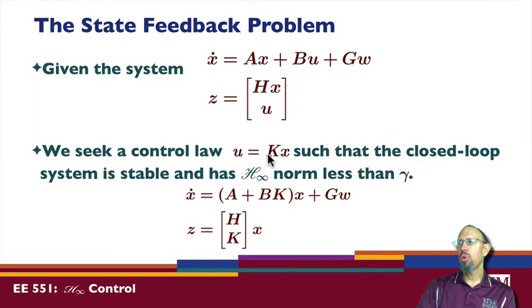And now we're seeking a control law, U is equal to K times X, such that the system is stable and has H infinity norm less than gamma. So when we apply this state feedback control law, this is now the system that we get.